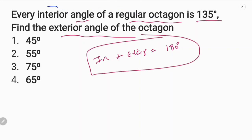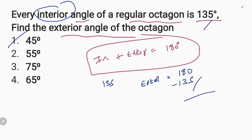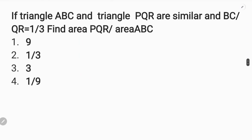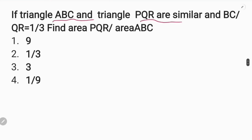Interior angle is not the same. Exterior angle is not the same. 180 is not the same. 45. This triangle is A, B, C. Triangle P, Q are similar triangles.